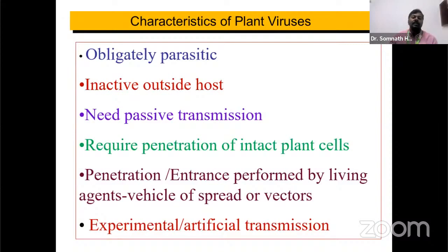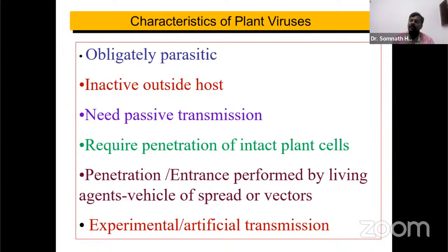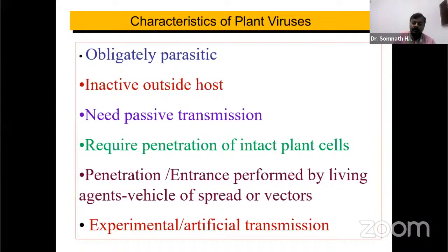Viruses need the host cell machinery for their multiplication. They require passive transmission, meaning transmission from one place to another by means of vectors. Different plant viruses are transmitted from one plant to another by insect vectors and nematodes. Viruses also require penetration of intact plant cells since they cannot enter the host cell by themselves — penetration is essential for their multiplication and development.